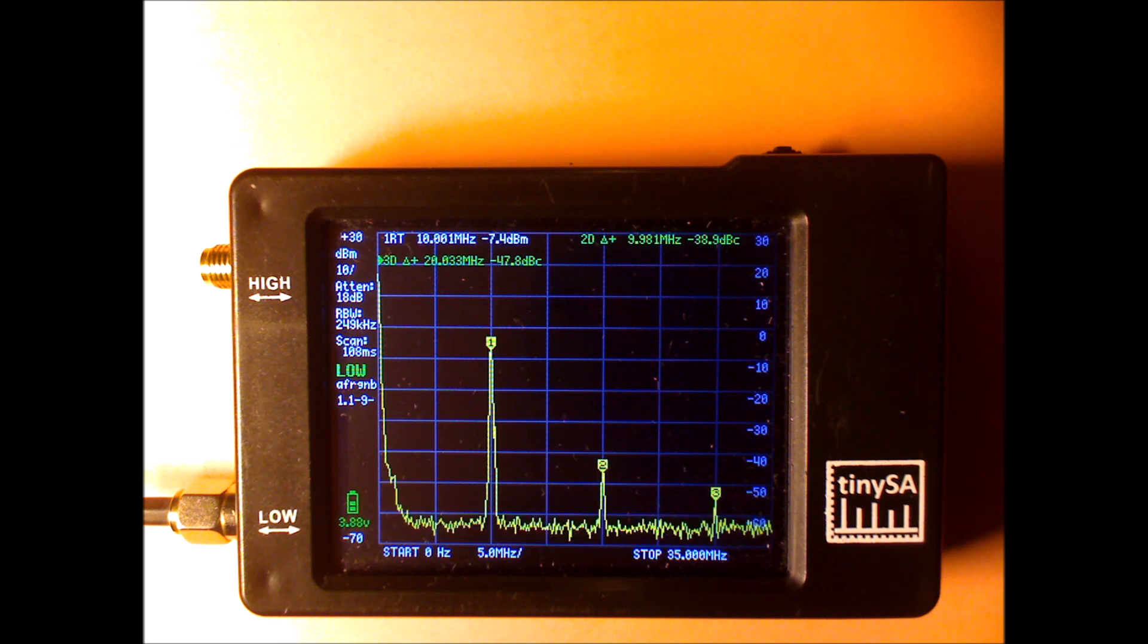As you can see, the 10 MHz signal is there at minus 1.9 dBm. So we have the 24 dB attenuation. And you see that the second and the third harmonic are there. They can now be observed.